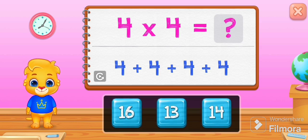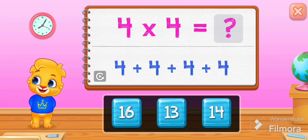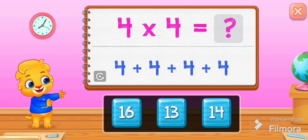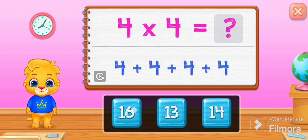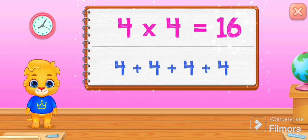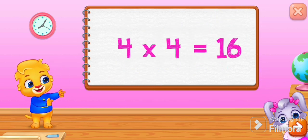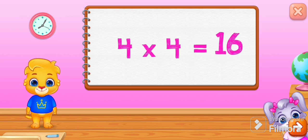Four times four equals four plus four plus four plus four. Sixteen! Four times four equals sixteen.